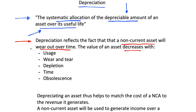So what are some of the reasons why we have to depreciate an asset? Why does an asset reduce in value over time? The obvious one is usage. The classic example is a car — just as soon as we drive our car out of a dealership, it decreases in value quite substantially, because it goes from being a new car to a used car. So we need to depreciate the value of this car because it's now used.